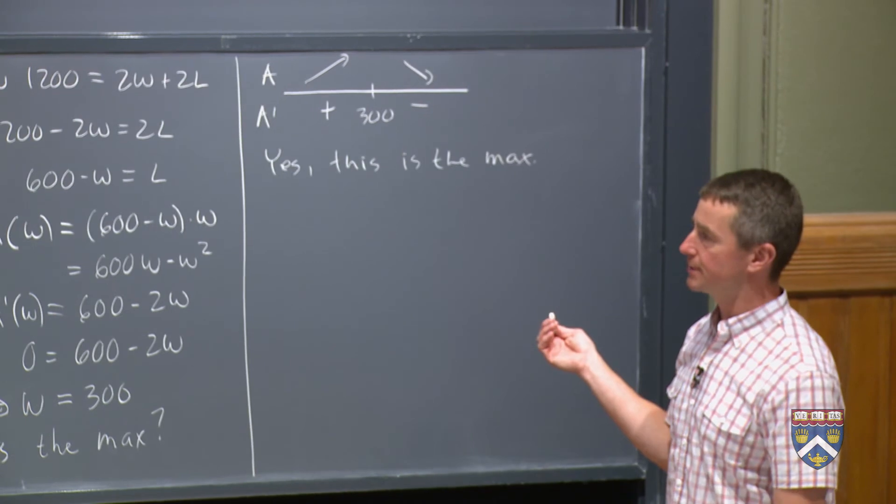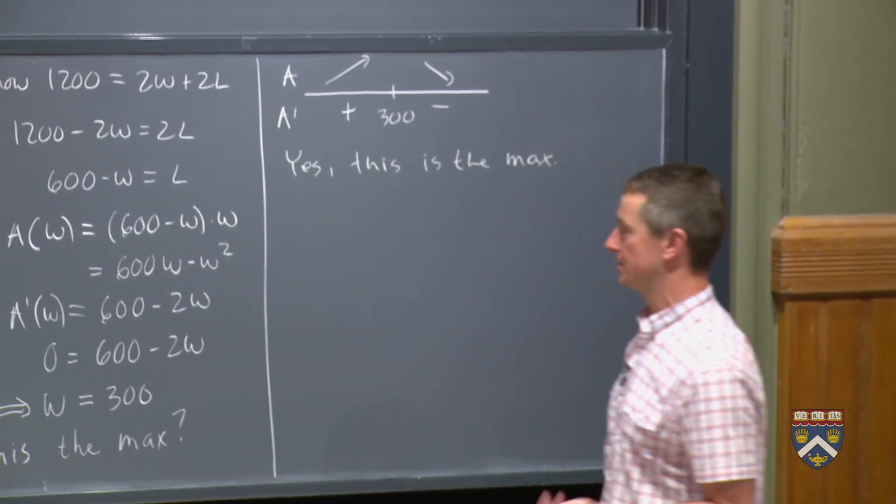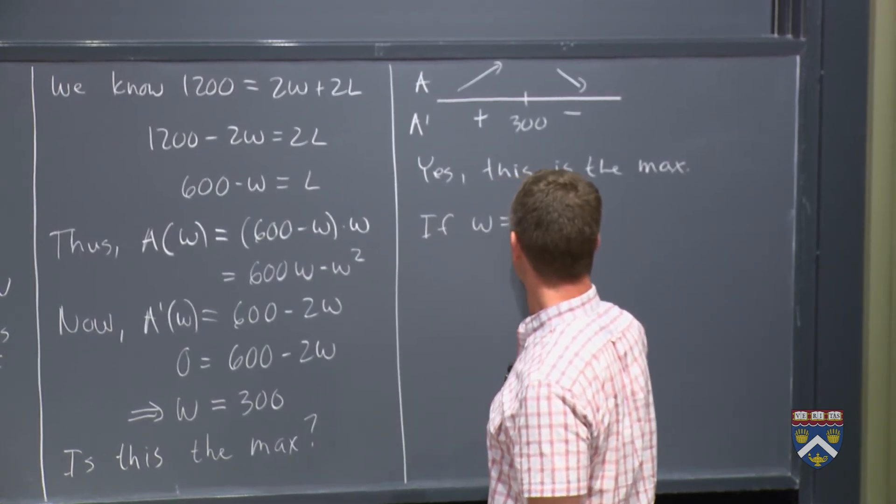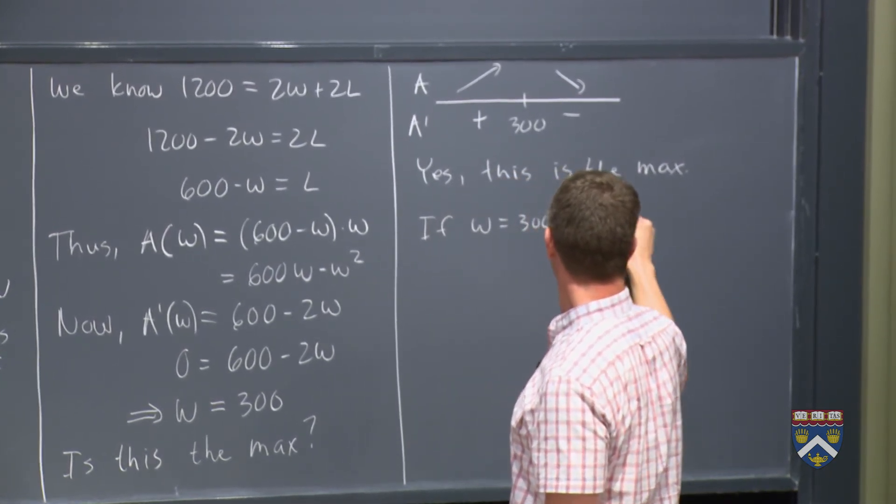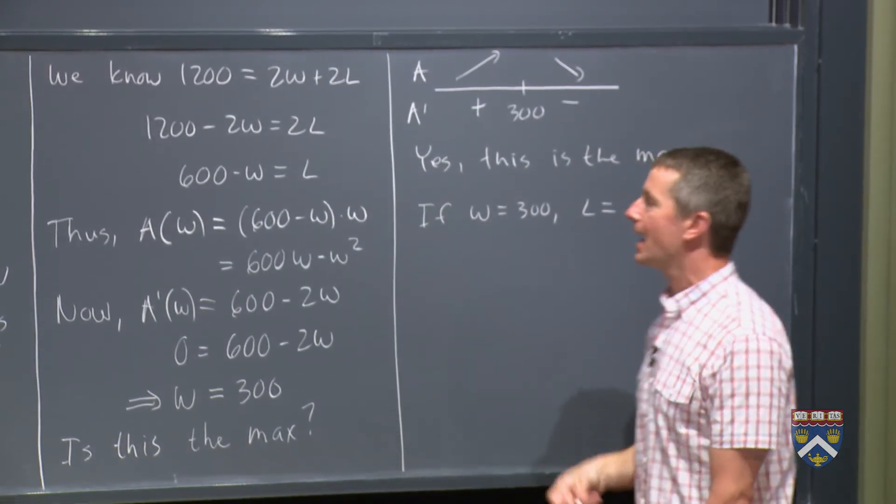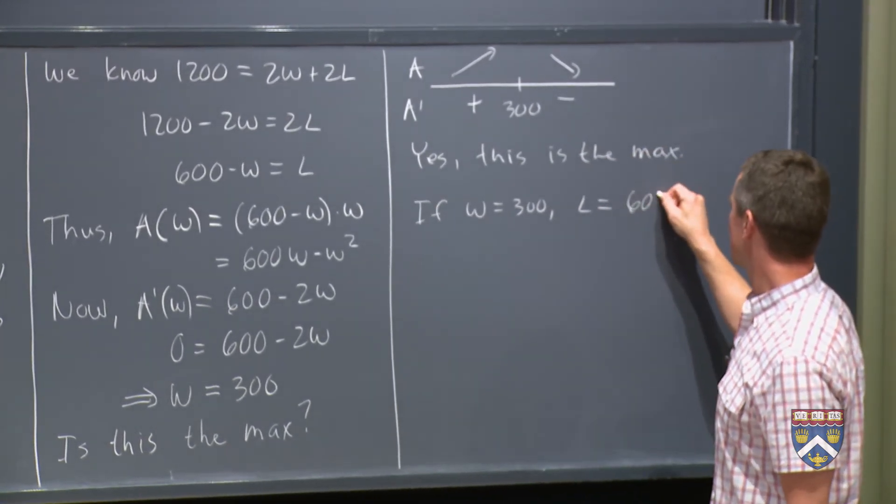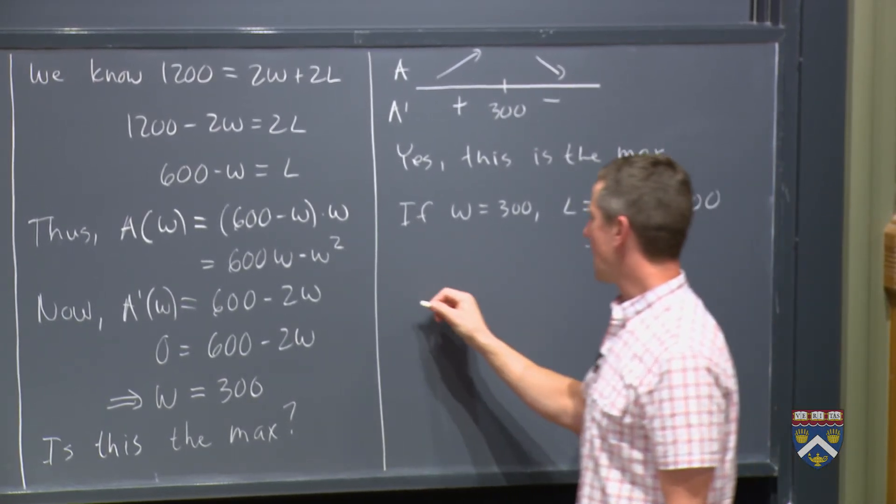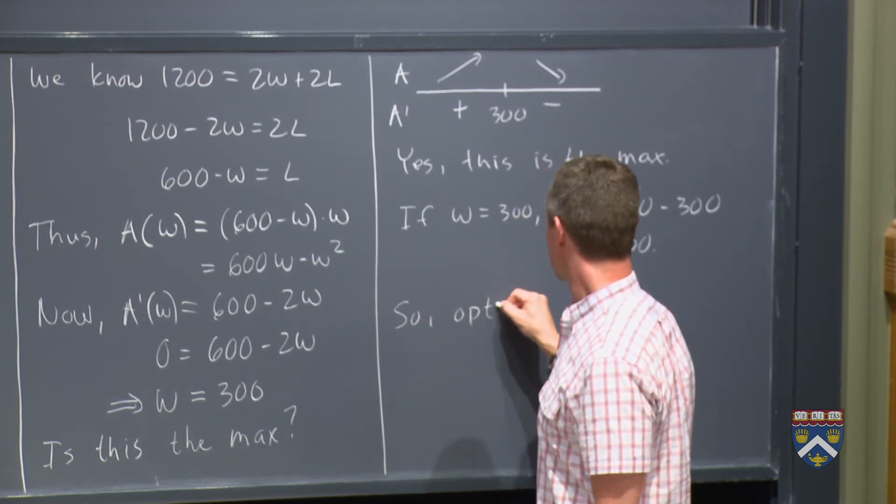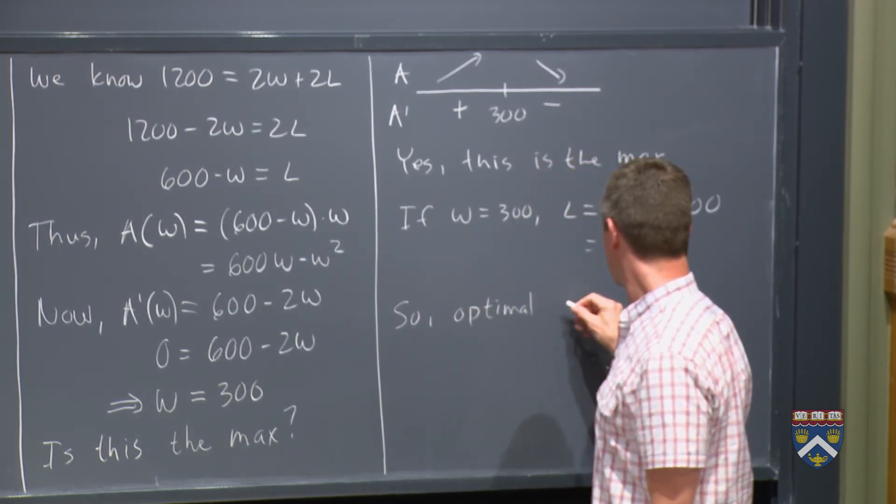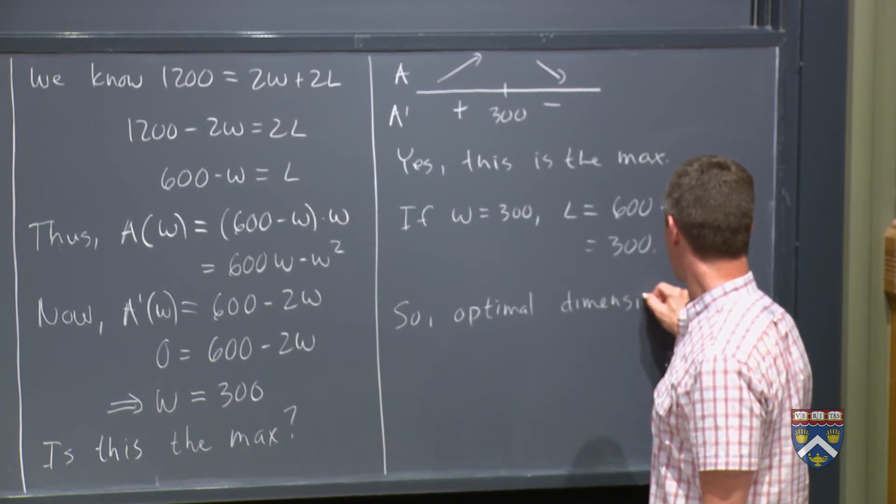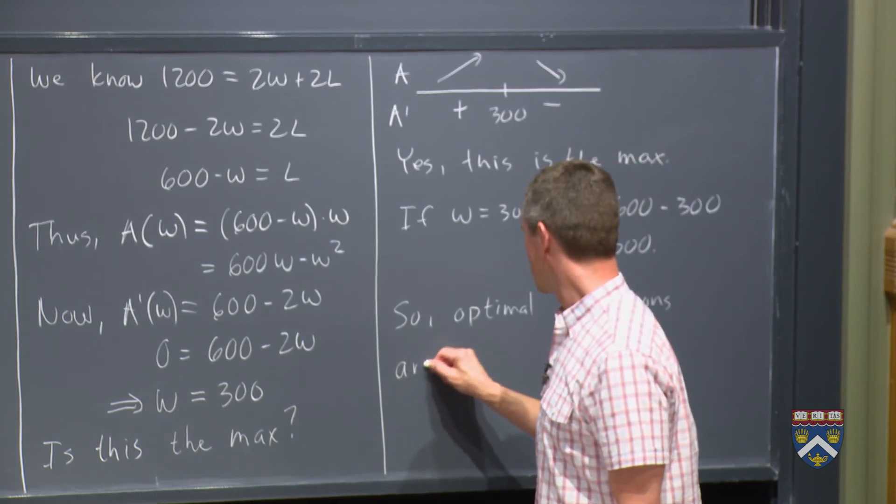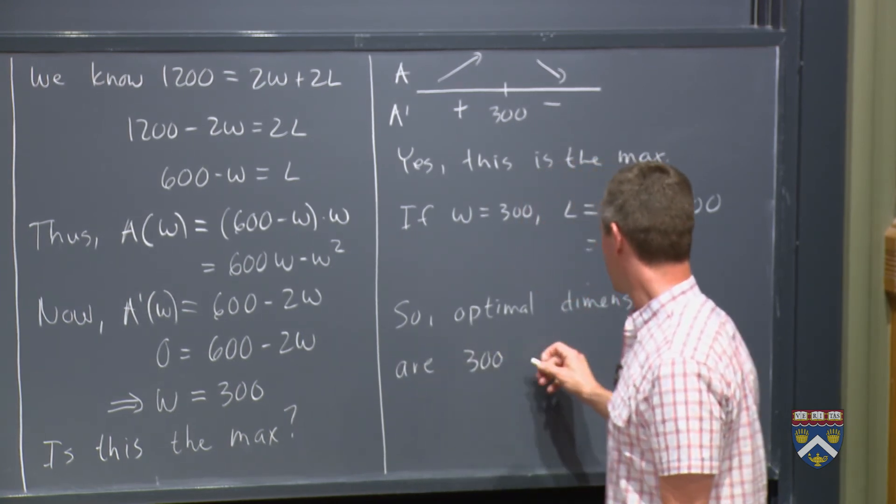Have we fully answered the question? Not quite, because the question asks, what are the dimensions? So we know that W is 300. And if W is 300, how do we find out what L is? Well, look, we've got an equation for L right there. 600 minus 300 equals 300. So the optimal dimensions are what you might have guessed, 300 by 300, in other words, forming a square. 300 feet by 300.